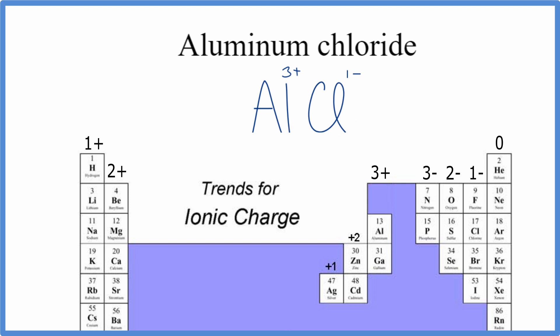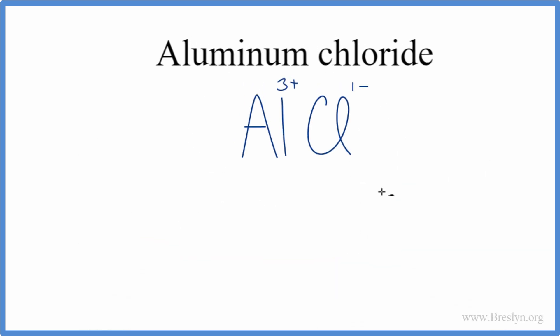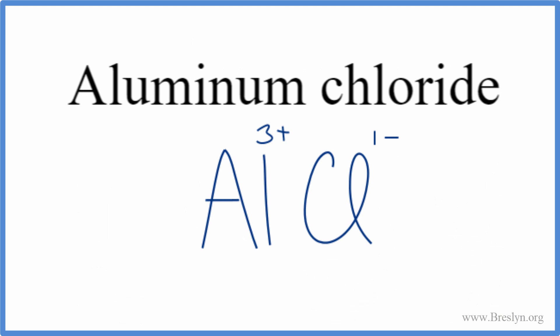We can change the subscripts to make the net charge zero overall, and here's a quick way to do this. We can move the one here and the three here. We don't write the one by convention, and we can get rid of these charges. That's the formula for aluminum chloride, AlCl₃. The method's called the crisscross method, but we should check our work.